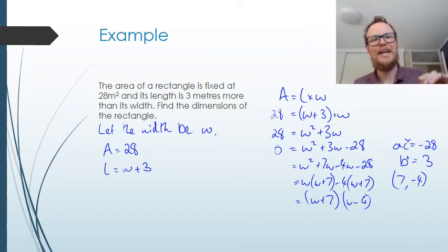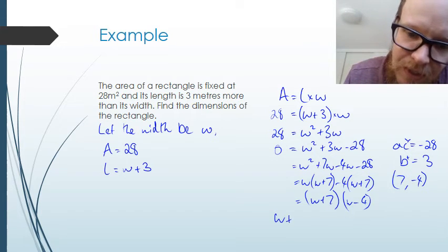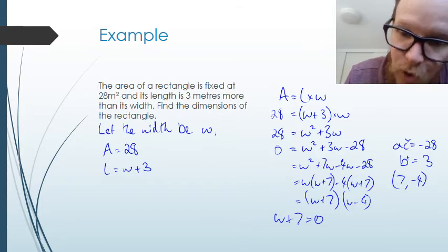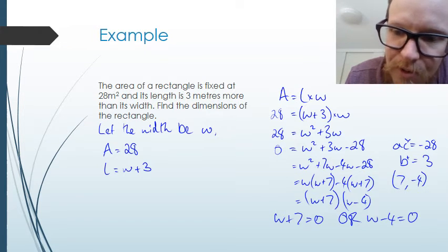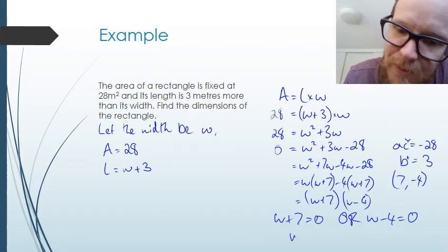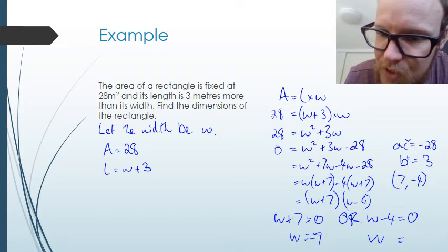Null factor theorem comes into play. w plus 7 must equal 0 or w minus 4 must equal 0. Which one can it be? It can't be both. w equals negative 7, negative 7 here, or w equals 4.